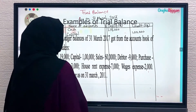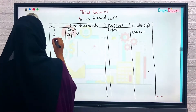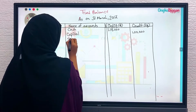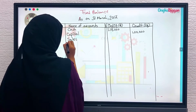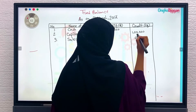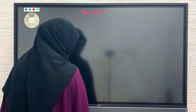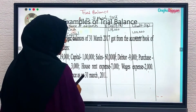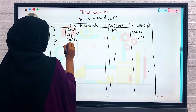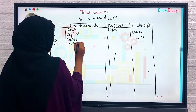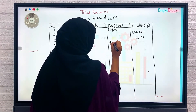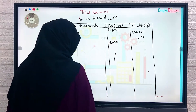Number three: sales 60,000. Sales is our income, so income should be on the credit side — 60,000. Number four: debtor 9,000. Debtor is our asset, and assets go on the debit side — 9,000.